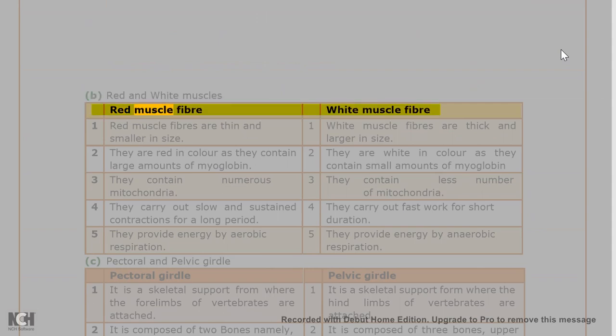B. Red and White muscles. Red muscle fiber: 1. Red muscle fibers are thin and smaller in size. 2. They are red in color as they contain large amounts of myoglobin. 3. They contain numerous mitochondria. 4. They carry out slow and sustained contractions for a long period. 5. They provide energy by aerobic respiration. White muscle fiber: 1. White muscle fibers are thick and larger in size. 2. They are white in color as they contain small amounts of myoglobin. 3. They contain less number of mitochondria. 4. They carry out fast work for short duration. 5. They provide energy by anaerobic respiration.